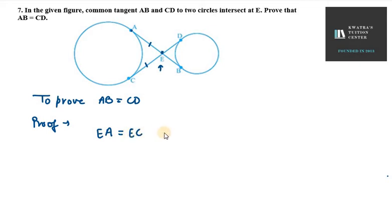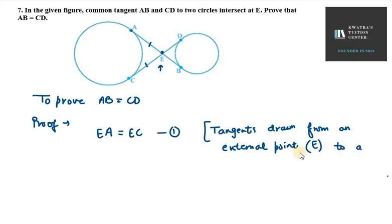So EA is equal to EC. This is equation number one. And please write the theorem here: tangents drawn from an external point E to a circle are equal.